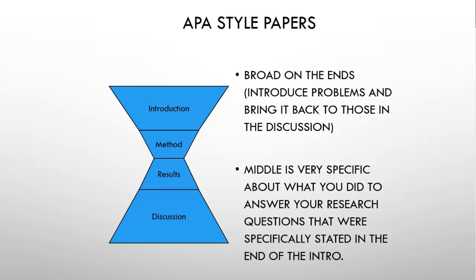As you get into the methods and results, these are really specific sections of your paper. You're going to talk about the exact scales that you used — in this case it'll be our class survey — and the exact people that you surveyed. It's the nitty-gritty of your study. Same thing with the results: what were your exact results? And then we start to fan out again.